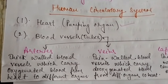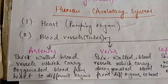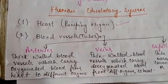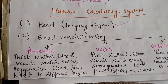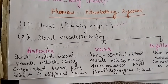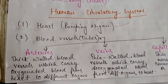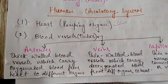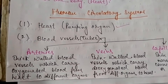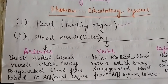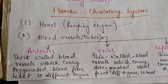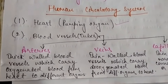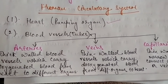Generally, arteries carry oxygenated blood and veins carry deoxygenated blood. But there is an exception: the pulmonary artery carries deoxygenated blood from the heart to the lungs. Similarly, the pulmonary vein carries oxygenated blood back from the lungs to the heart. So pulmonary artery is an exception carrying deoxygenated blood, and pulmonary vein carries oxygenated blood.